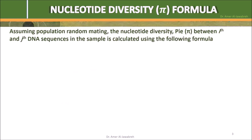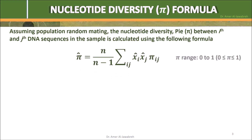Formula. Assuming population random mating, the nucleotide diversity pi between the i-th and j-th DNA sequences in the sample is calculated using the following formula: pi-hat equals n over n minus 1, times the sum of xi-hat times xj-hat times pi-ij between i and j. N is the number of DNA sequences examined.